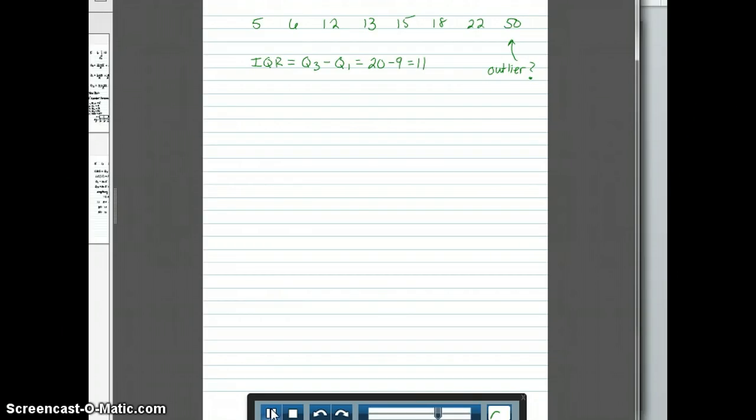Next we're going to take that 11 and multiply it by 1.5. And it's important that when you multiply, you are not rounding any values. So when I multiply 1.5 by 11, I get 16.5. I'm not rounding that to 17 or to 16.